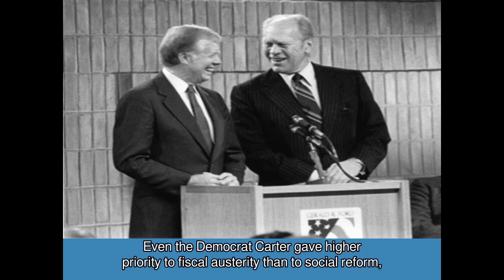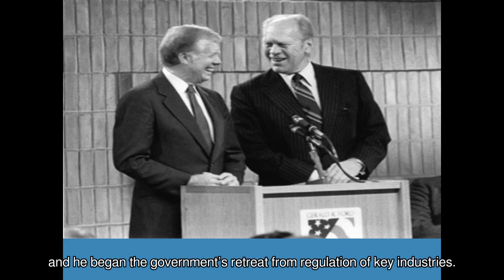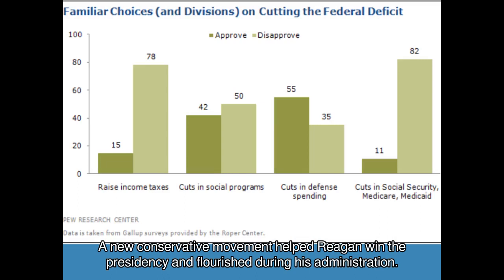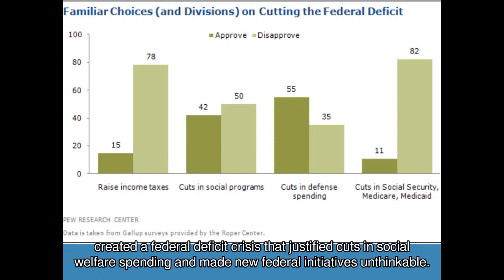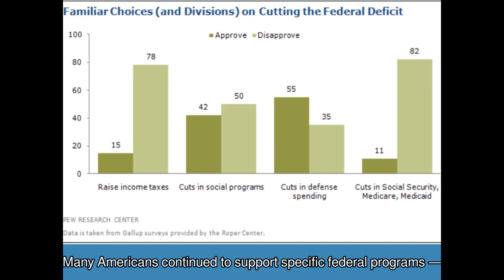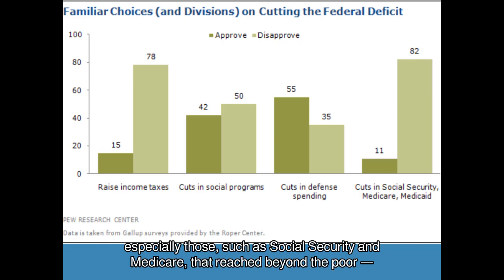A new conservative movement helped Reagan win the presidency and flourished during his administration. Reagan's tax cuts, combined with hefty increases in defense spending, created a federal deficit crisis that justified cuts in social welfare spending and made new federal initiatives unthinkable. Many Americans continued to support specific federal programs, especially those such as Social Security and Medicare that reached beyond the poor, but public sentiment about the government in general had taken a U-turn from the Roosevelt era.